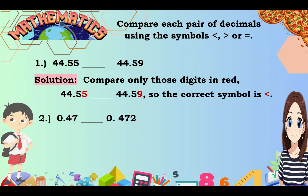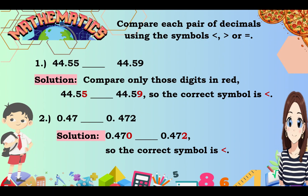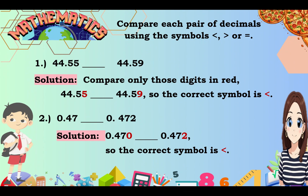Number 2: 0 and 47 hundredths compared with 0 and 472 thousandths. For our solution, let's add a 0 next to 47 so it has a digit in the thousandths place, giving us 470 thousandths. Now they have the same number of decimal places. Since 470 ends with 0 and 472 ends with 2, and 0 is less than 2, the correct symbol is less than. Therefore, 470 thousandths is less than 472 thousandths.